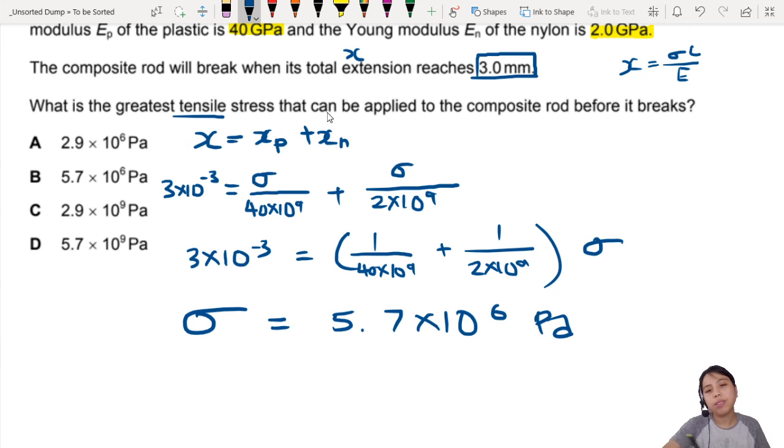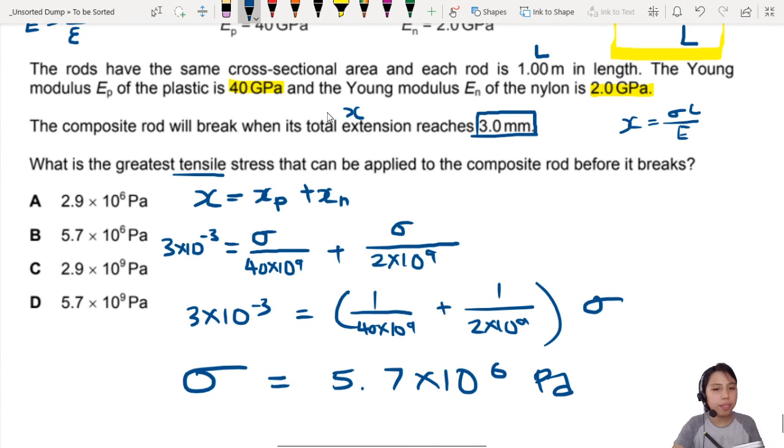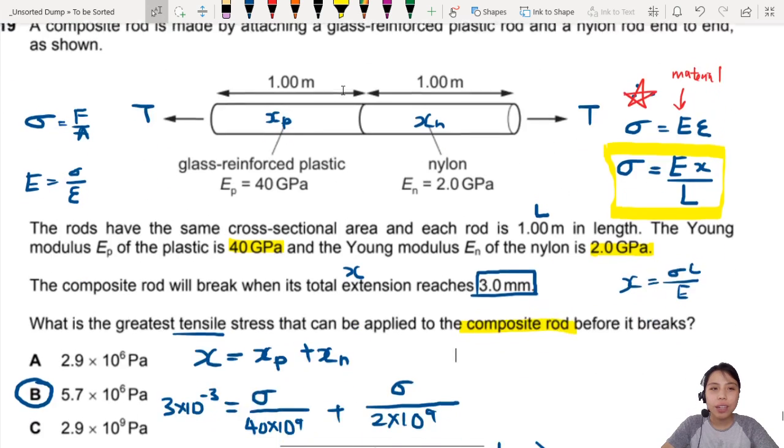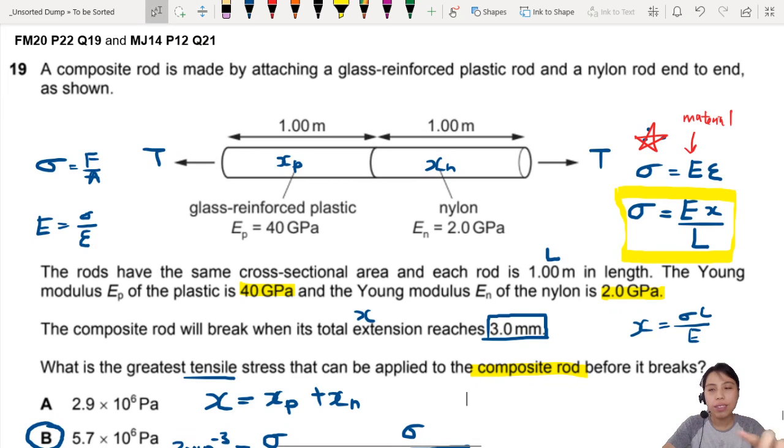And sigma will get you about 5.7 times 10^6 pascals. I think the calculator... let's do a quick double check. It's a lot of fractions - if you want to do this in multiple steps you can do this in multiple steps, but if not that's fine, you can do it all one shot in your calculator. So 5.7 times 10^6 is the answer for the greatest tensile stress for the composite rod before it breaks. That's this MCQ question. See you in the next one.